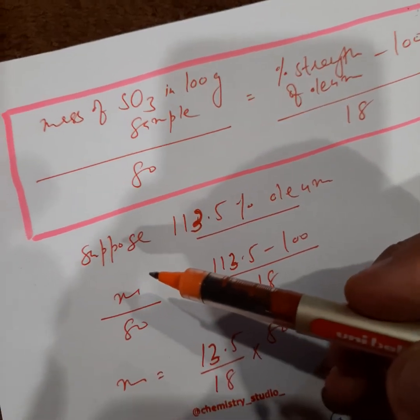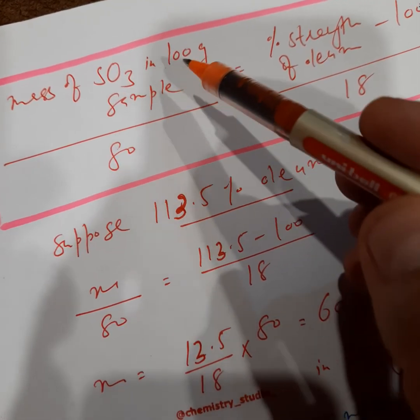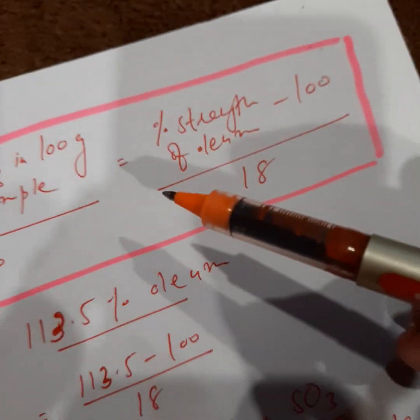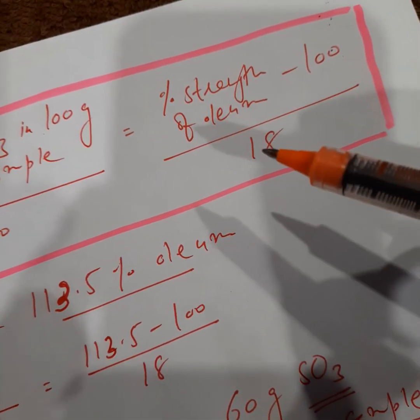As a quick method you can also note down this formula: mass of sulfur trioxide in a 100 gram sample upon 80 is equal to percentage strength of oleum minus 100 upon 18.